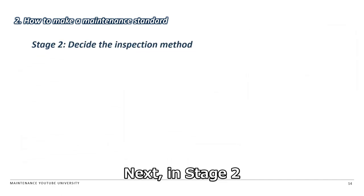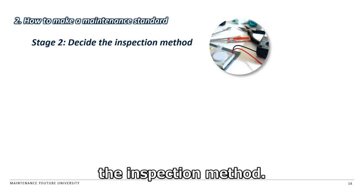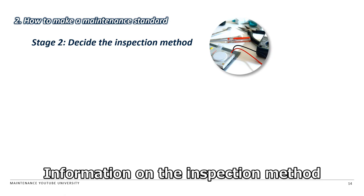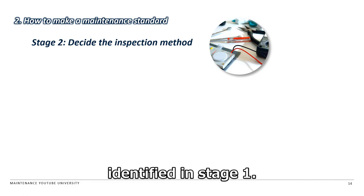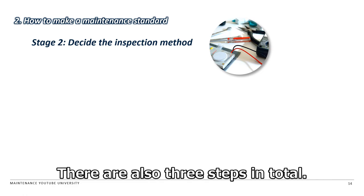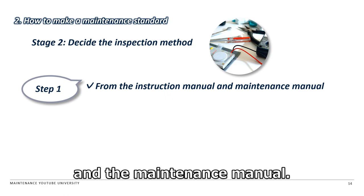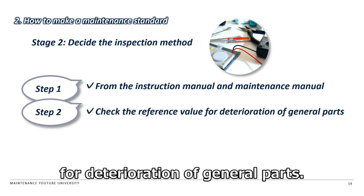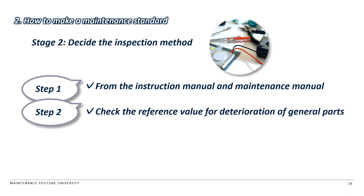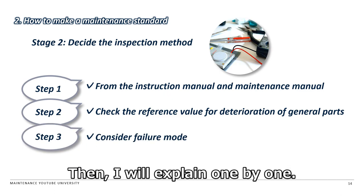Next, in Stage 2, I will explain how to determine the inspection method. Information on the inspection method will be added to each inspection item identified in Stage 1. There are also 3 steps in total. Step 1: Check the inspection method of the instruction manual and maintenance manual. Step 2: Check the reference value for determination of general parts. Step 3: Consider the failure mode. I will explain each one by one.